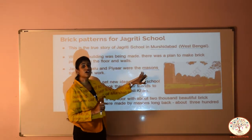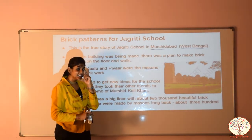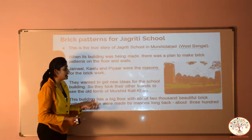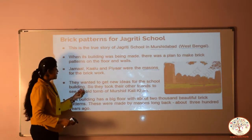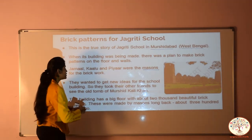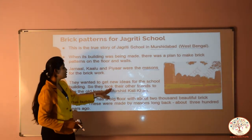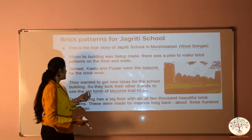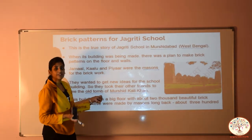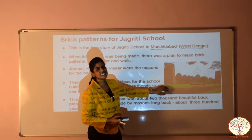Jamal, Kalu and PR were the masons for building Jagrati school. They wanted to get new ideas. हम जब भी कुछ काम करते हैं, तो हमें ideas की जरूरत होती है — so like that, Jamal, Kalu and PR को some new ideas चाहिए थे for the school building. So they took their other friends to see the old tomb of Murshid Kali Khan. अपने other friends के साथ गए एक old tomb पर — पुराना मकबरा बोल सकते हैं इसको. And it was of Murshid Kali Khan. Can you see the picture here? This is that old tomb.